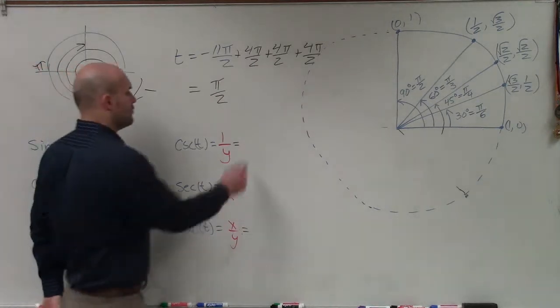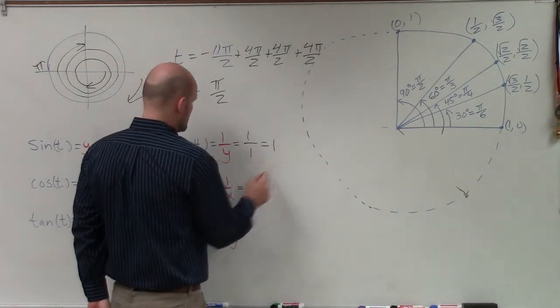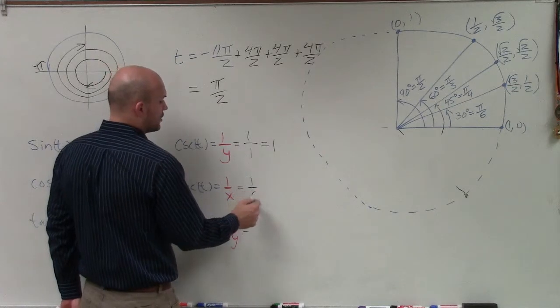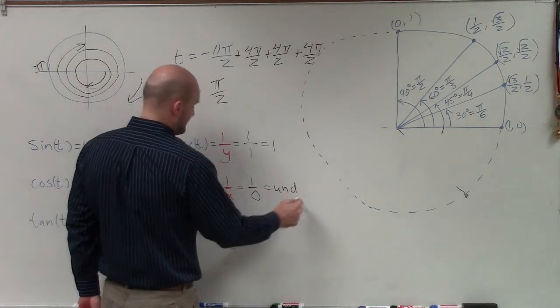For cosecant, we have 1 over y, which is 1 over 1, which equals 1. For secant, we have 1 over x, which is 1 over 0, which is again undefined.